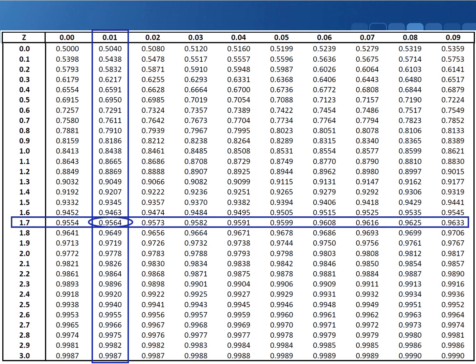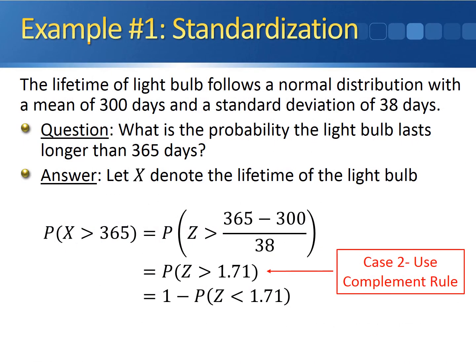Bringing everything together: the probability that z is less than 1.71 was 0.9564 — that's the value we got directly from the table. 1 minus this probability gives you the desired area: the probability that z is greater than 1.71, which is 0.0436. So the probability that a light bulb burns longer than 365 days is 0.0436.